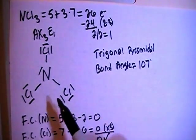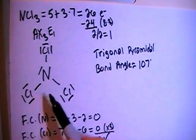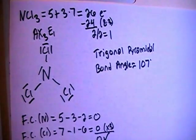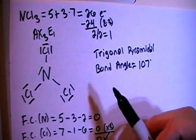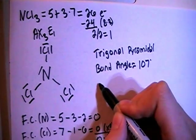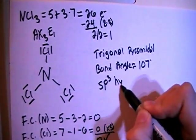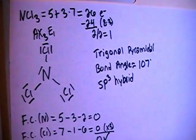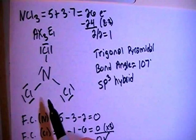In terms of hybridization, looking at the central nitrogen, there's four electron groups or four potential bonding sites. So that means that we need four hybrid orbitals. So sp3 hybrid, meaning one s and three p, so a total of four orbitals to match the four electron groups.